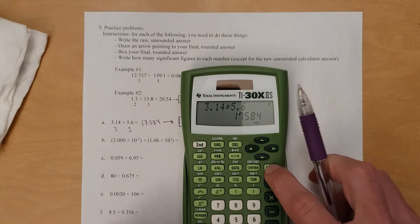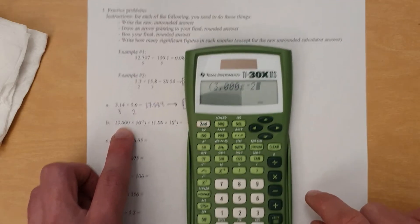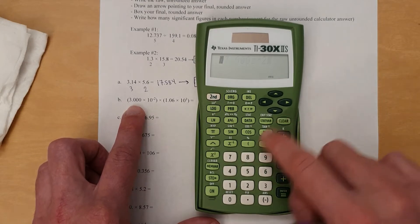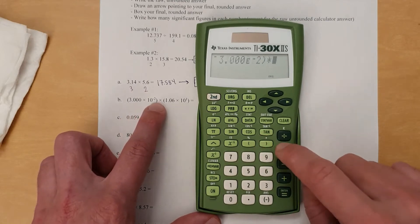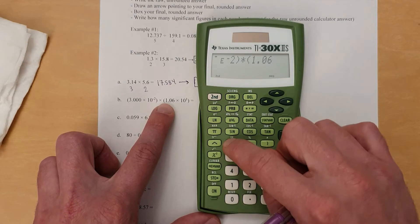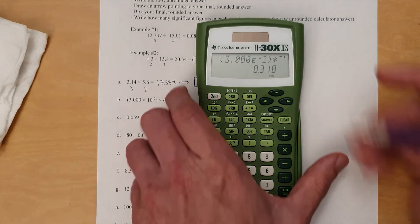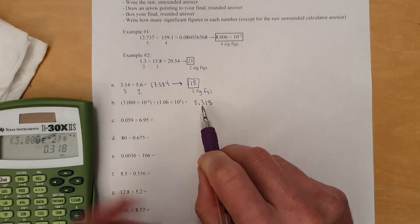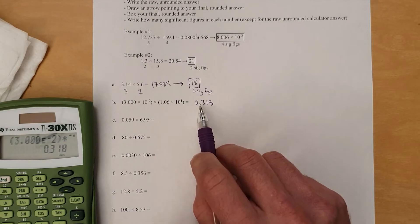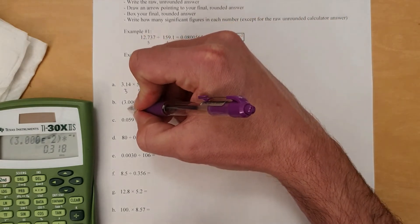All right, moving on to this right here. This is your hint. Include parentheses anytime you do math involving scientific notation. 3.000 times 10 to the negative second. See, I should make sure that it's visible what I'm doing as I do that. So 3.000 times 10 to the negative second. Close parentheses. Times, open parentheses, 1.06 times 10 to the power of 1. All right, there we go. So 0.318. This is going to be 4 significant figures.